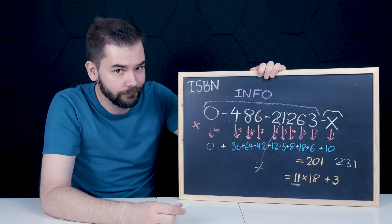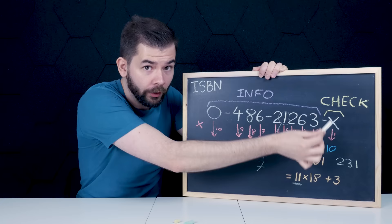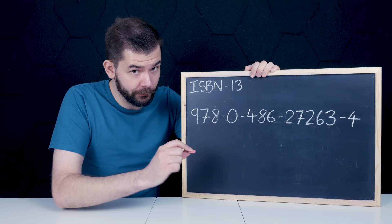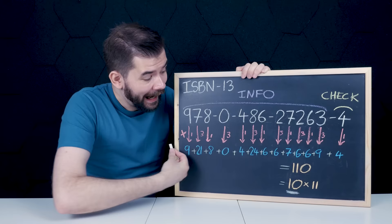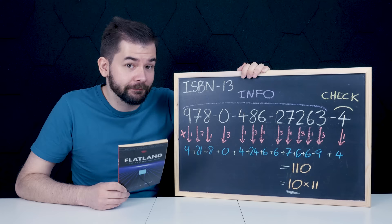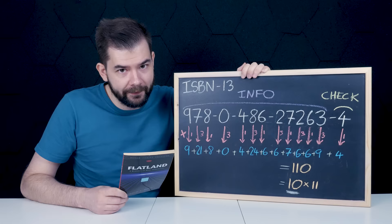This final digit is also called a check digit, and they underline the whole principle behind error detection and correction. At the cost of including more digits, you can detect and correct mistakes. For books published during or after 2007, with an ISBN 13 code, you take 1 times the first digit, plus 3 times the second, 1 times the third, 3 times the fourth, and so on. Add them all up, and this time the result must be a multiple of 10. These ISBNs come from my copy of Flatland, which conveniently has both an ISBN 10 and an ISBN 13. And as we've said, these codes are error detecting, but not error correcting. So what about error correction? Let's look at those next.